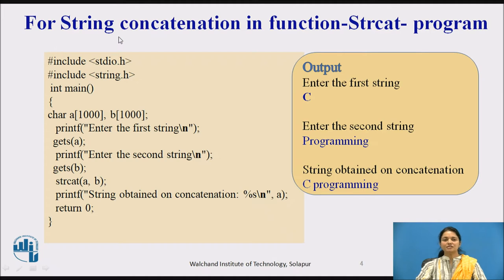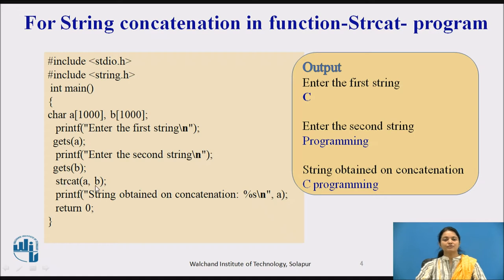Here we will see a simple program which uses the library function strcat for concatenation of two strings. We are including stdio.h and also string.h, which will help to run the function strcat, which is a library function supported by string.h. We are declaring two strings, a and b, each as a character array of size 1000.